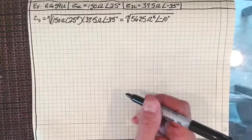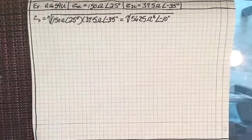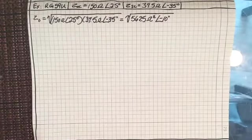Then if I take the square root of that, that gives me 75 ohms at an angle of minus 5 degrees. Does everyone see how that worked? I took the square root and divided the minus 10 by 2, which of course gave me minus 5.